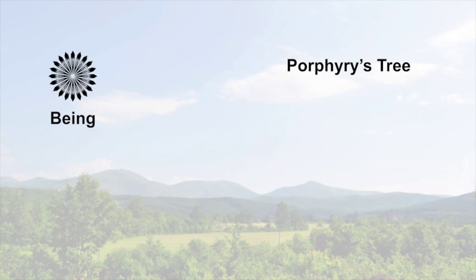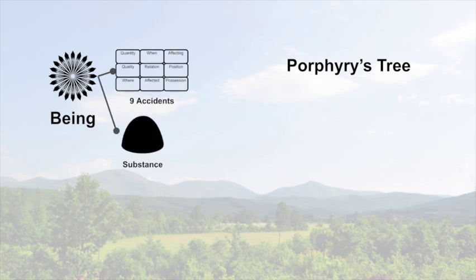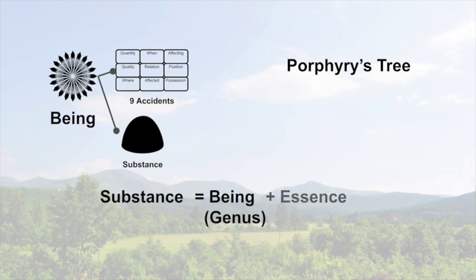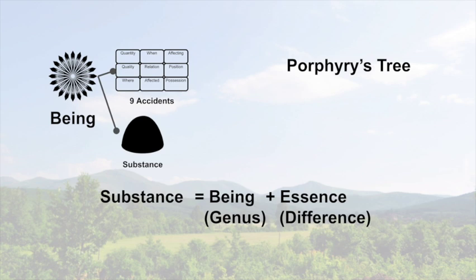Porphyry's tree is a method of classifying beings and substances that he developed. Let's start with being: anything that exists is a being of some kind. We can separate that into the ten categories by saying some things are a substance—a subject, a being—and some things that exist are qualities of substances. Substance is being, which you might call a genus, plus an essence, which is the difference. So every fundamental primary substance must have some kind of essence or definition of what it is. It's not a quality; it's not said of a subject; it's not said in a subject. It is a subject because it has an essence.